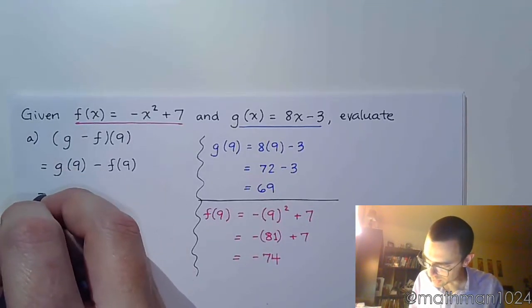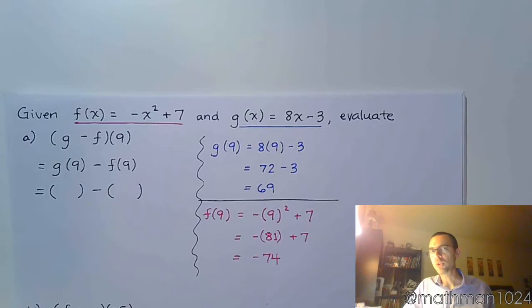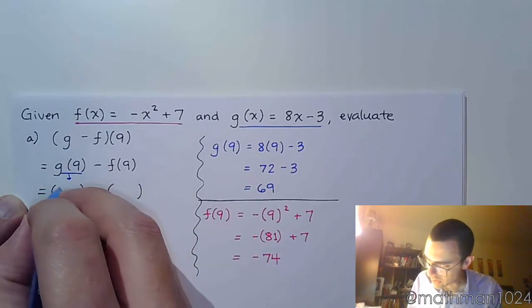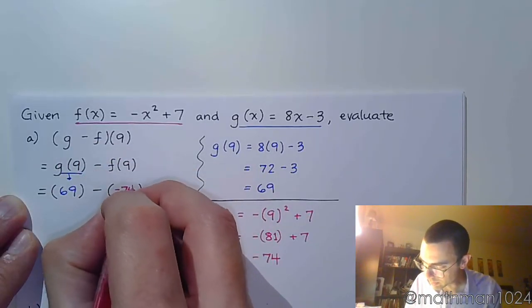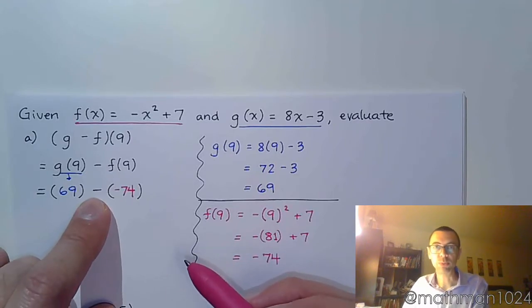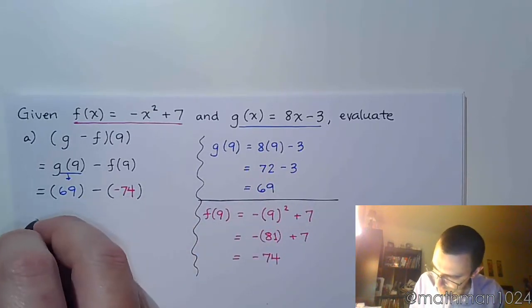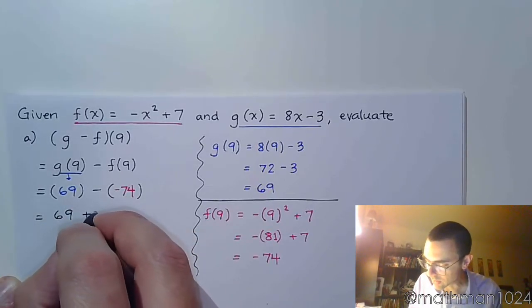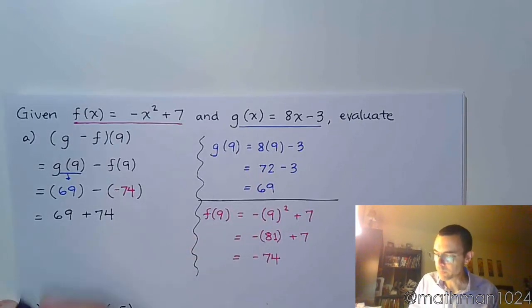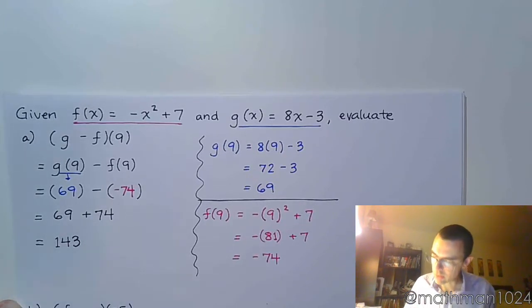Now let's come back here to the big expression, g of 9 minus f of 9. I think it is important to use parentheses whenever you're doing the substitution back in here. So g of 9 is 69, and f of 9 is negative 74. Please note that there is subtraction here because of the way the problem is written. But now you've got a negative from that evaluation. So if I rewrite this without parentheses, that's 69 minus a negative 74 becomes a plus 74.